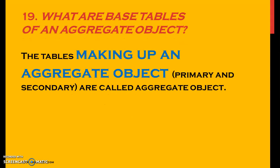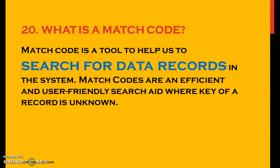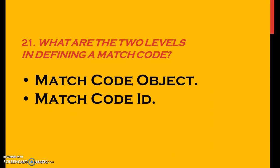So what are the base tables in an aggregate object? The tables make up an aggregate object — primary and secondary are called aggregate objects. So what is a match code? A match code is a tool to help us search for data records in the system. Match codes are an efficient and user-friendly search aid where the key of a record is unknown. Match code object and match code ID are the two levels of defining a match code.